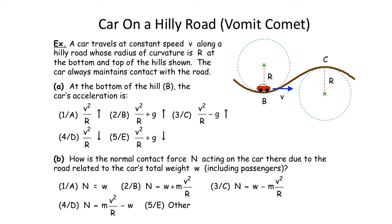Let's put in some numbers. Assume v squared over R equals g — then the normal force gives me 2g apparent weight. If v squared over R equals 2g, I feel 3g — my body moving through circular motion at that speed can make me feel three times as heavy. And if I make this term equal to 10.2g's, the normal force on my body is 11.2g's.